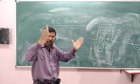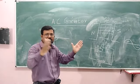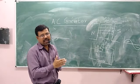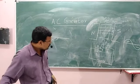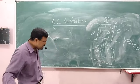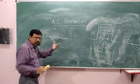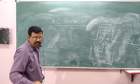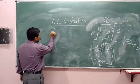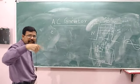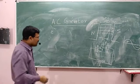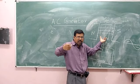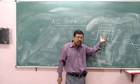In one complete cycle, you will have a positive and a negative cycle. The induced EMF in this AC generator is directly proportional to the rate of change of magnetic flux. Faster the magnetic flux linked with the coil changes, larger will be the induced EMF.